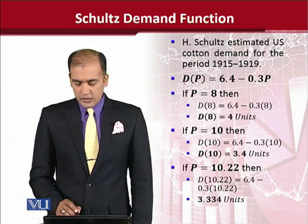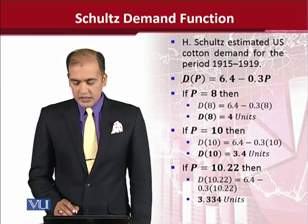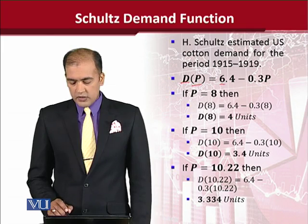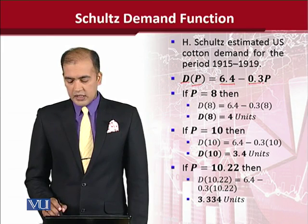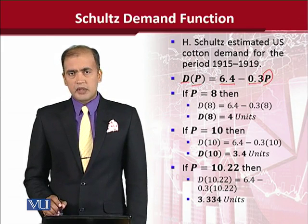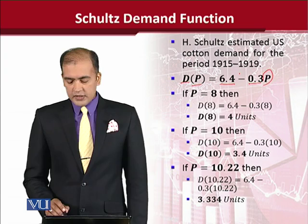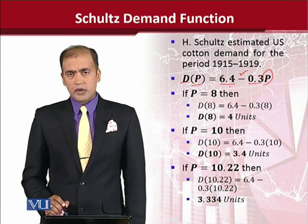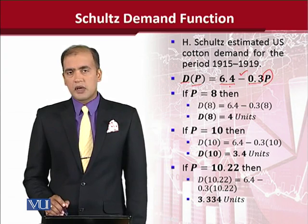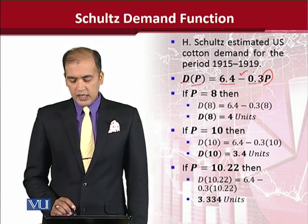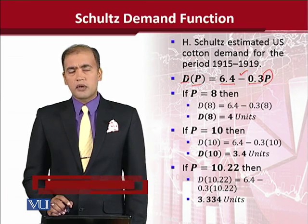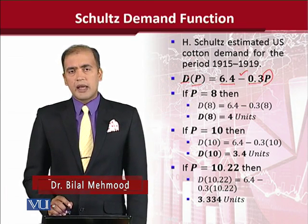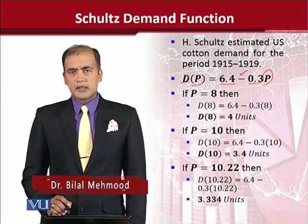As you can see, demand of cotton depends upon price — with a constant value and with a value being deducted, which is the product of 0.3 with price. This negative sign shows the negative relationship between price and quantity demanded, which is the usual connotation of the law of demand — a negative relationship, ceteris paribus.